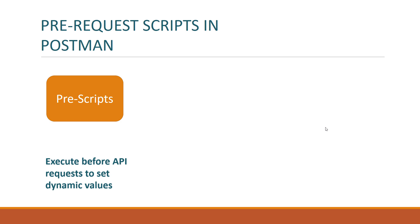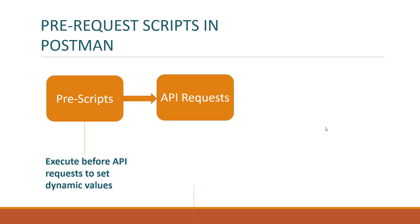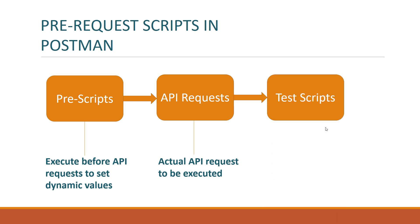In this way, whenever you execute an API it will run with a unique dynamic parameter. The pre-scripts execute before the API request, and once your API request has been completed successfully, your test scripts will get executed. This is the whole workflow: pre-scripts → API request → test scripts. Now let's open Postman and see this practically.